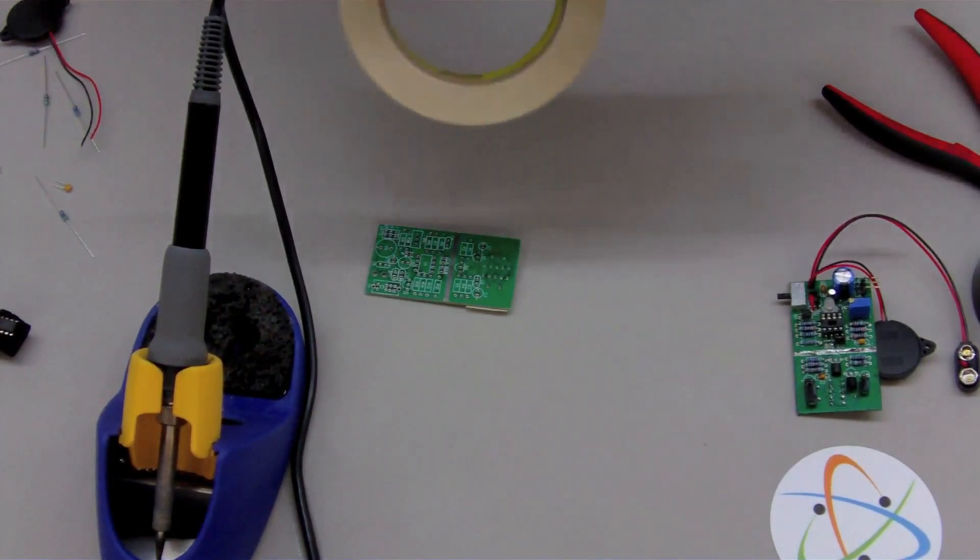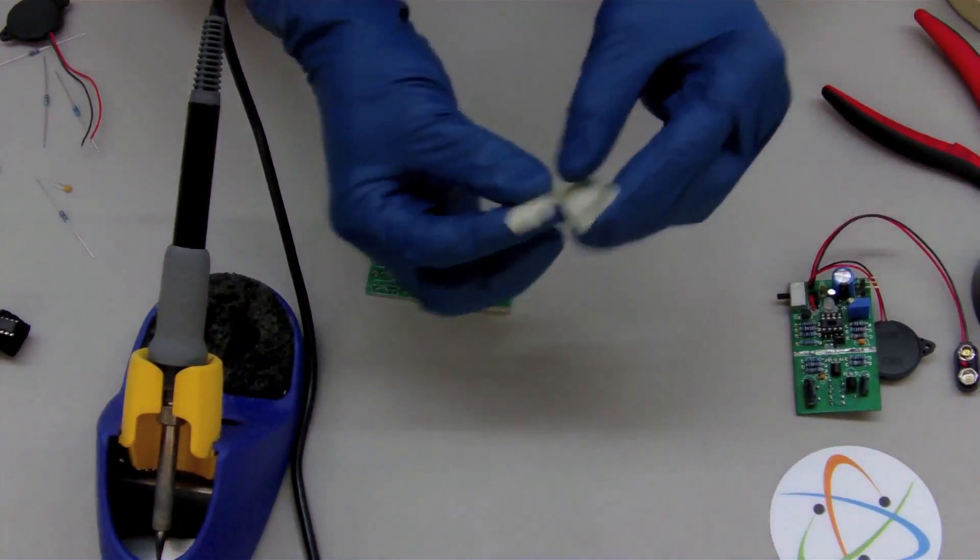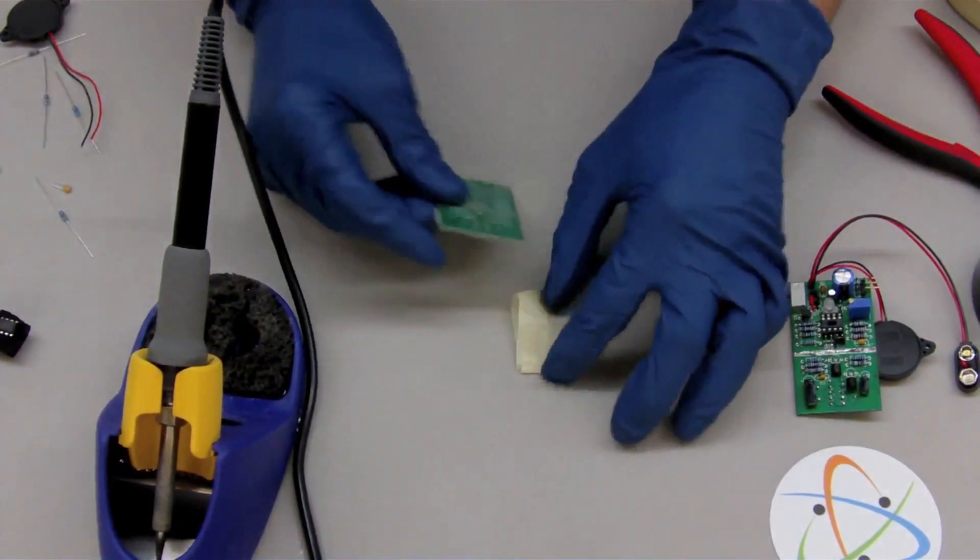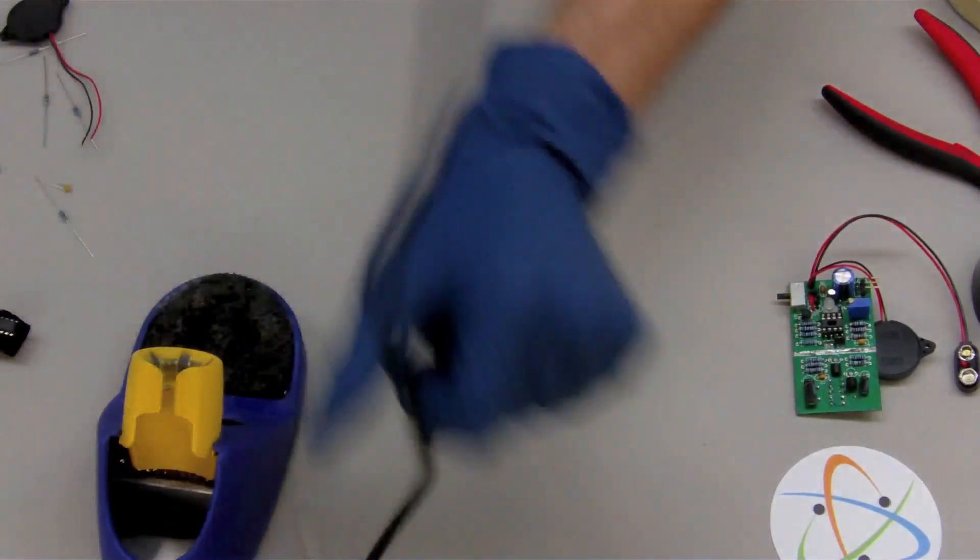Another thing is if you don't have a helping hand to hold your circuit board, a trick that I do is I take a piece of tape, loop it back on itself, and then stick the board onto the table.